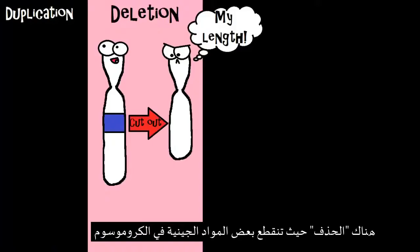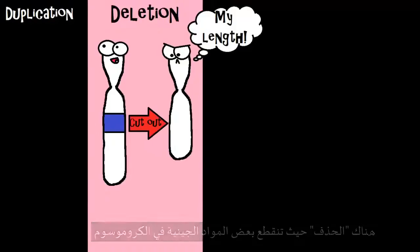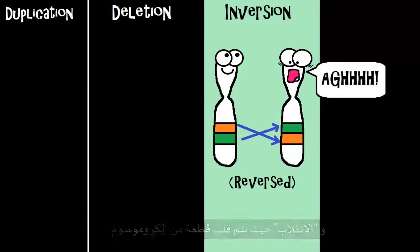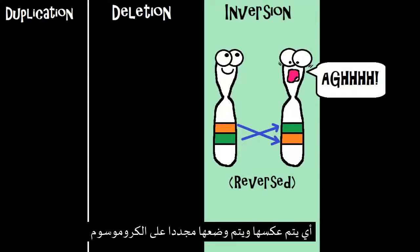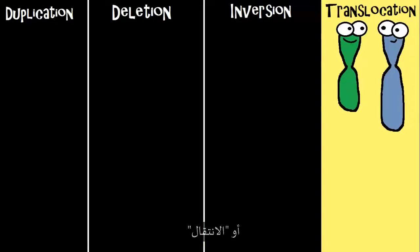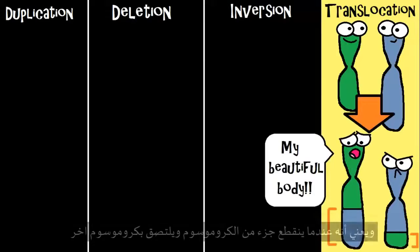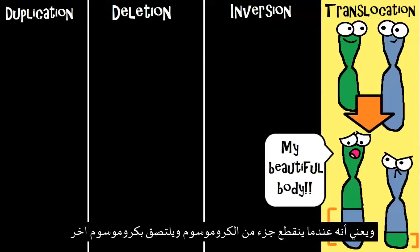There's deletion, where some of the genetic material from the chromosome breaks off. Inversion is when a broken chromosome segment gets inversed and put back on the chromosome. Or translocation — and there are a lot of 'trans' words in biology — that's when a fragment from one chromosome breaks off and attaches to another chromosome.